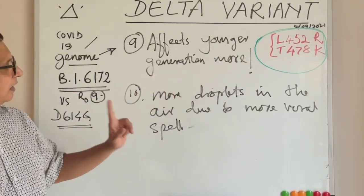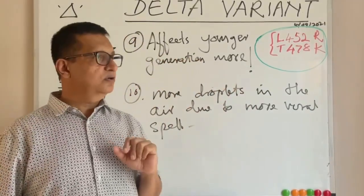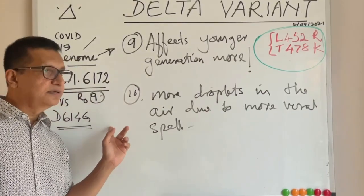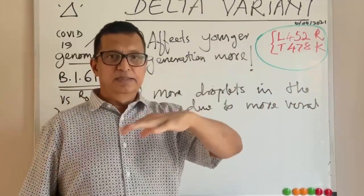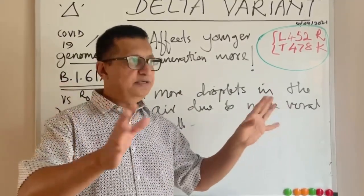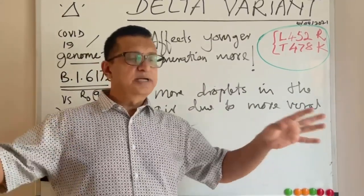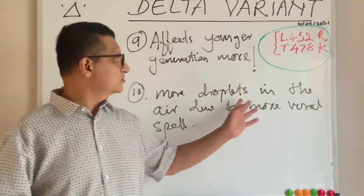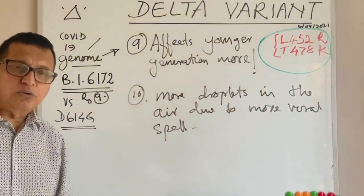The tenth factor is that due to the high viral load and increased R number, there are more droplets in the air. In populated places with many people, the density of droplets increases, which further contributes to the domination of the delta variant all over the world.